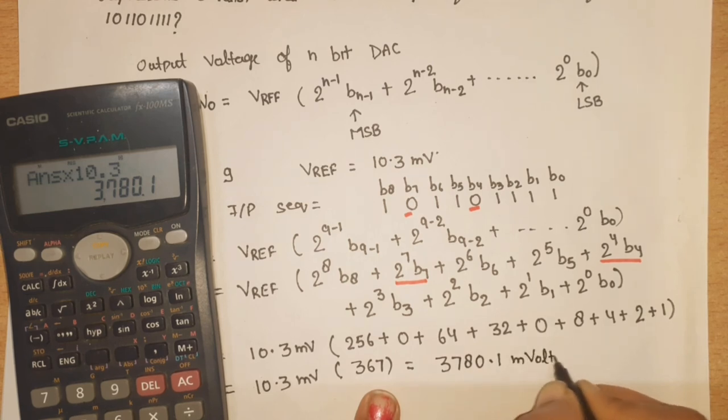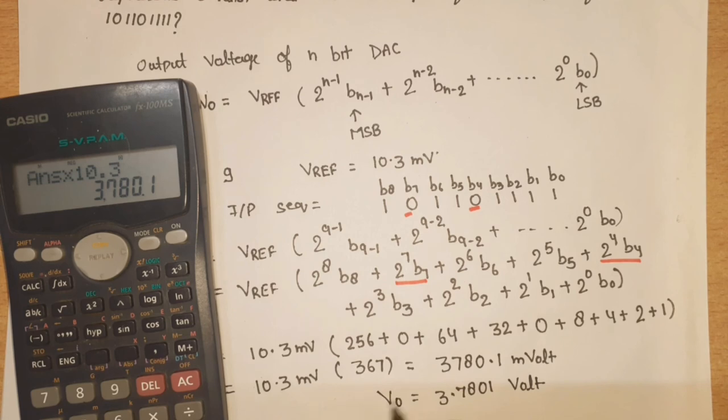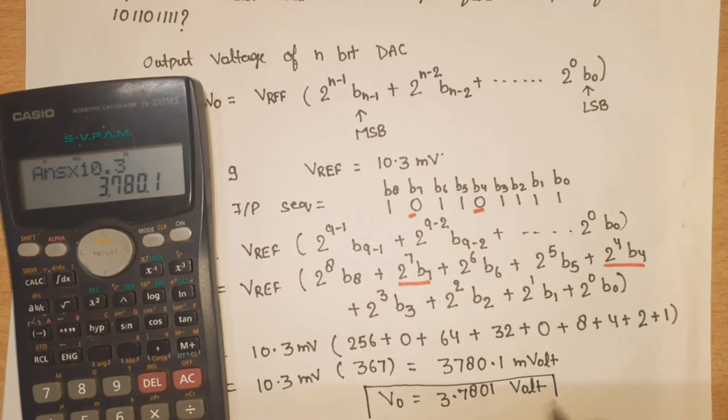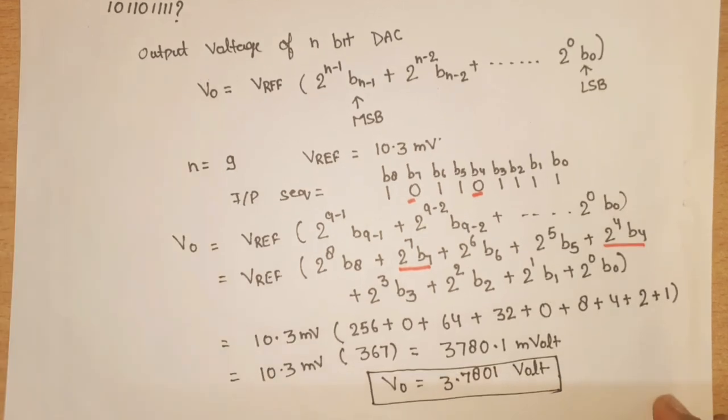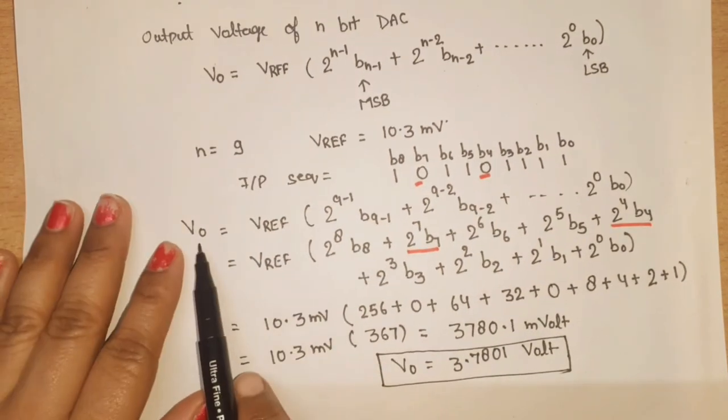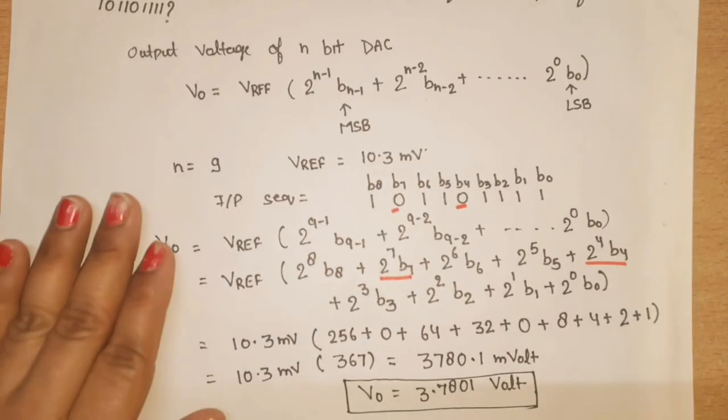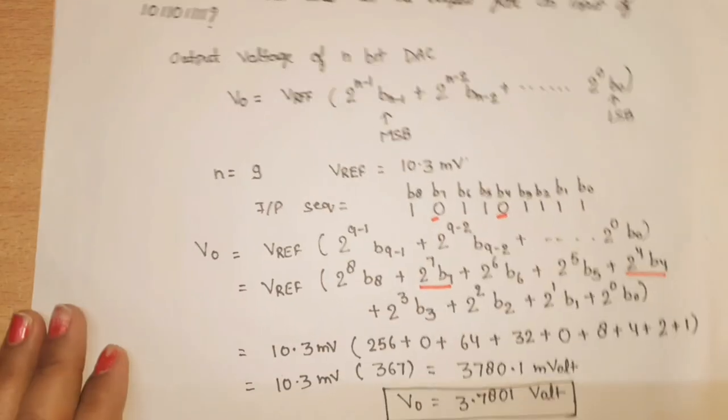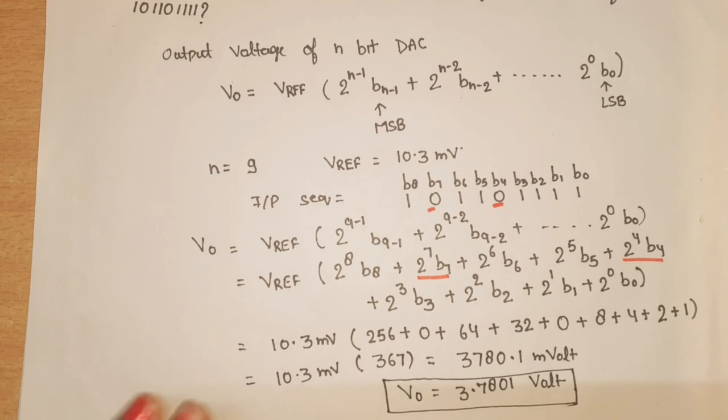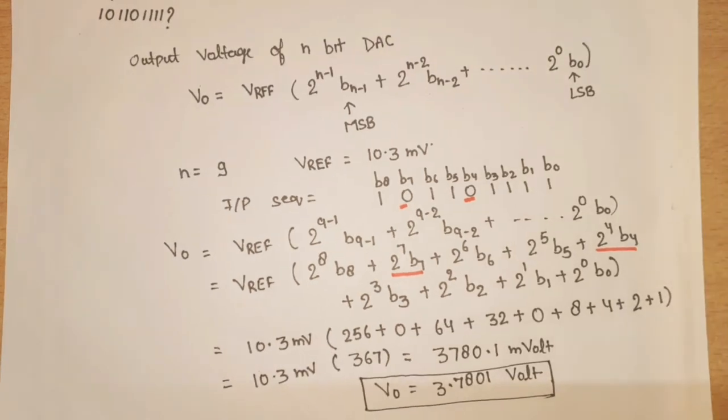We can write 3.7801 volt. So V0's value will be this is the V0 for given input sequence. You can directly use this formula, put the V0 values here and calculate directly. It depends on how many marks your question is. If it's 2 marks, calculate directly from the formula. If it's more than 2 marks, then explain the entire formula, then calculate the value. Thank you so much.